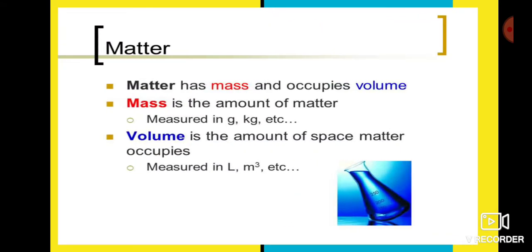Matter has mass and occupies space, and space means volume — so matter occupies volume. Mass means the amount of matter; for example, it may be in grams or kilograms. Volume means the amount of space matter occupies; it may be in liters, cubic meters, and so on. Mass is usually measured in grams or kilograms, and volume is measured in liters, cubic meters, etc.